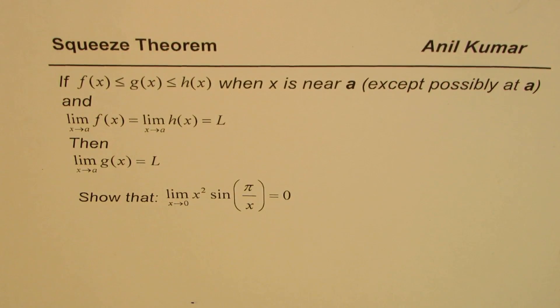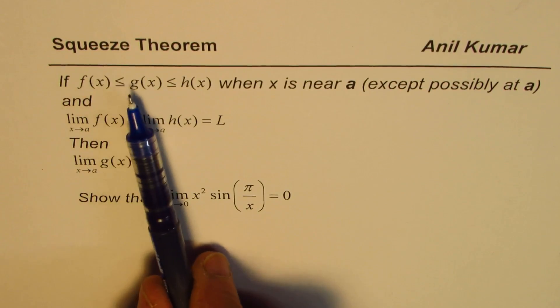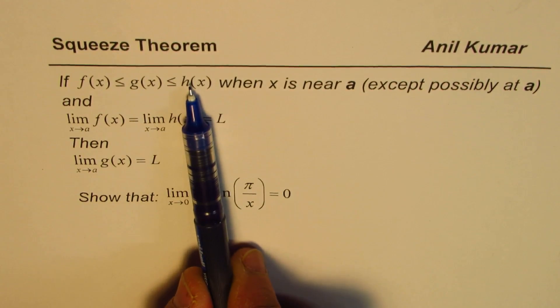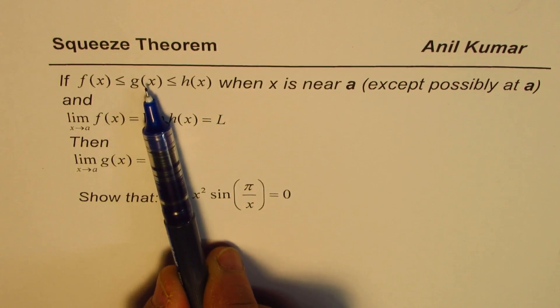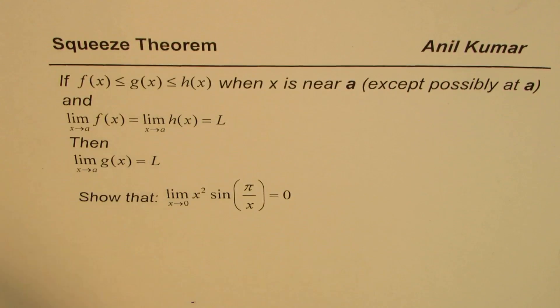That's what it means and makes sense, right? If you are between two values and if these two values on the boundary are exactly the same, then the value of that function has to be those values. This is a very useful theorem to solve many limits, especially trigonometric functions.